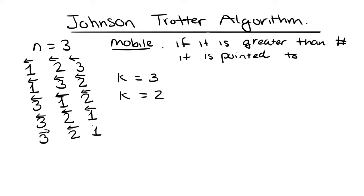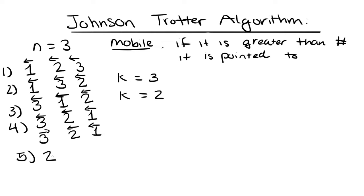I'll number these for easier visualization: permutations 1 through 4. Permutation 3 is 3, 1, 2 and permutation 4 is 3, 2, 1 — same digits, different arrows. Now for permutation 5, which is 3, 2, 1: 3 points to 2, which is mobile; 2 points to 3, so 2 is not mobile; 1 points to 2, not mobile. So we switch the places of 3, giving us permutation 6.